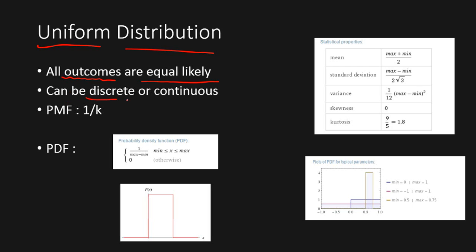And it can be discrete as well as continuous in nature. The probability mass function in the discrete case is given by 1 by k, where k is the number of outcomes. In the case of a dice experiment, the number of outcomes is six, so the probability that you will get any one of these numbers on the faces when you throw a dice is 1 by 6. Using probability mass function, we will be able to get the exact probability value.